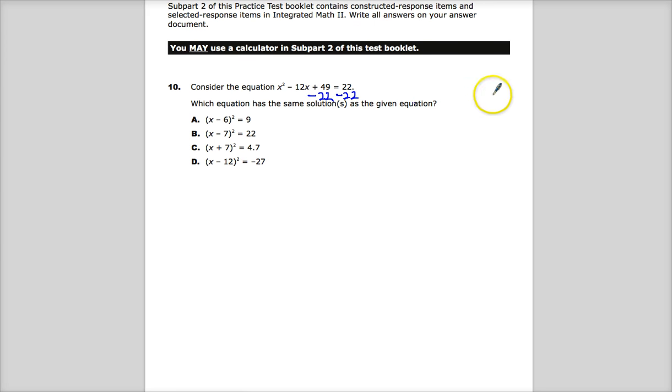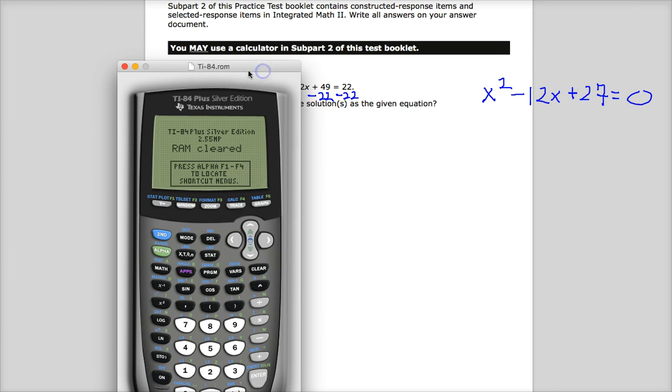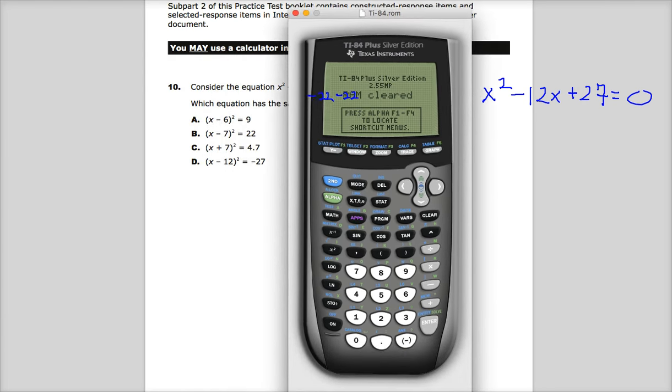I get 27 on the side, so I end up with x squared minus 12x plus 27 equals 0. What we're going to do now is graph. Yeah, there we are. We're definitely graphing. Let me erase this.